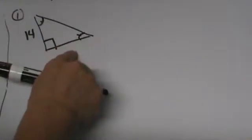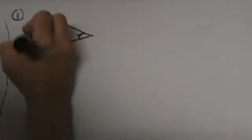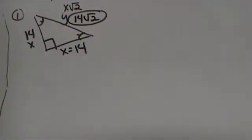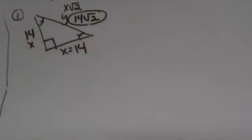Let's try number 1. We have a leg that is 14. That means the other leg x is the same value, so it is also 14. Then y — the hypotenuse — is x√2, so we plug in 14 and get 14√2. That was a forward problem: label both legs and multiply by √2 to get the hypotenuse.